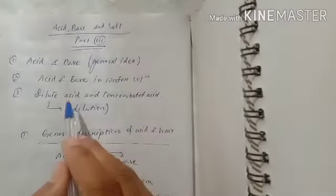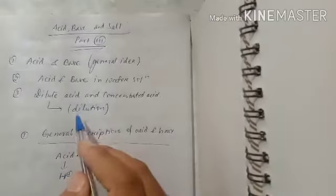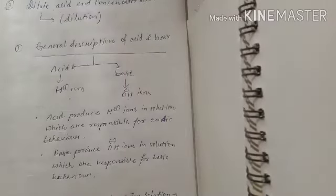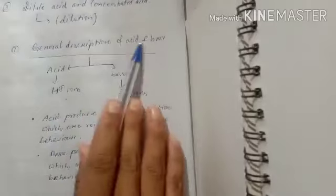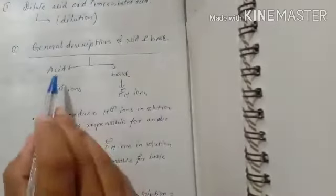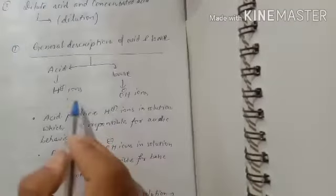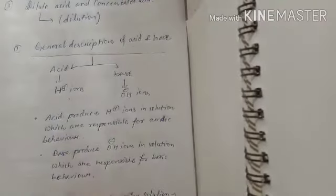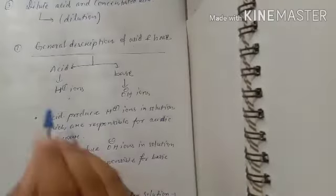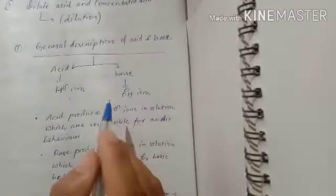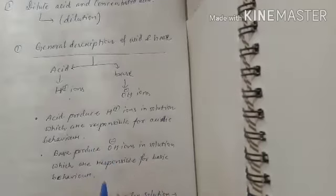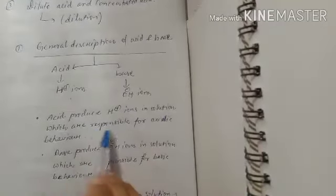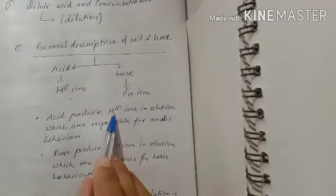So let's discuss point by point. First point: general description of acid and base. Normally, acid produces H⁺ positive ions in solution, which are responsible for acidic properties. That means H⁺ positive ions give acidic properties.